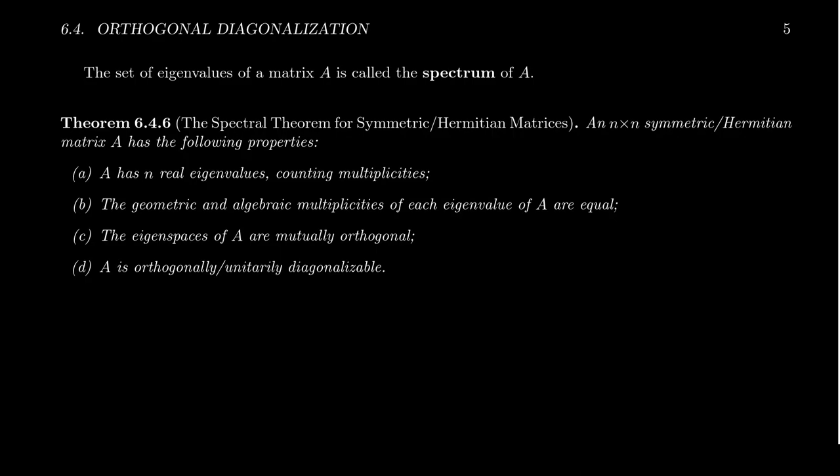And so for any square symmetric or Hermitian matrices, the following four things are true. Some of the things we've seen already, some we haven't. So first, and one of the most impressive things out there is that for a symmetric or Hermitian matrix A, if it's n by n, it'll have n eigenvalues and that's counting multiplicity. And particularly these eigenvalues are going to be real numbers.